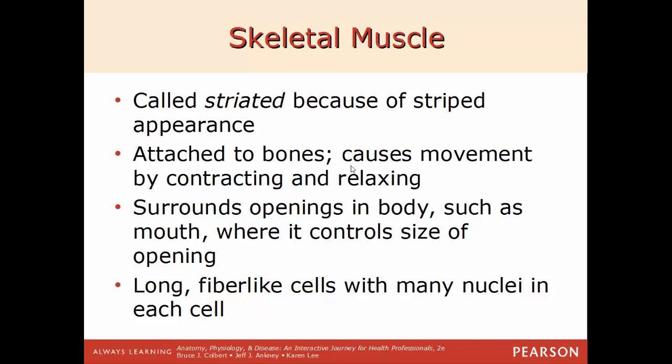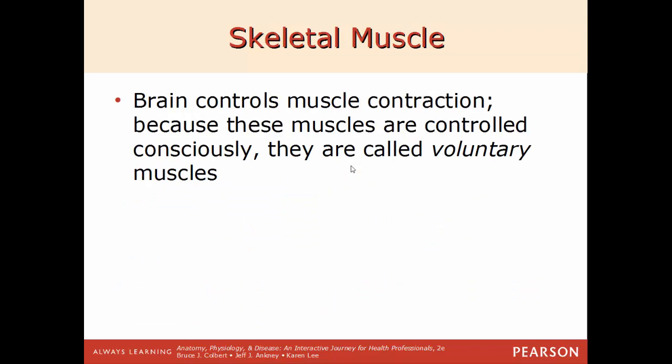Skeletal muscle is found around the openings of the body, such as in the mouth, to control the size of the opening. Muscle fibers are long and tube-like, with many nuclei in each cell. Because skeletal muscles are controlled consciously, they're called voluntary muscles — you can choose to pick up a cup or walk across a room. Of the three types, skeletal is the only voluntary muscle; the other two are not under your control and are therefore involuntary.